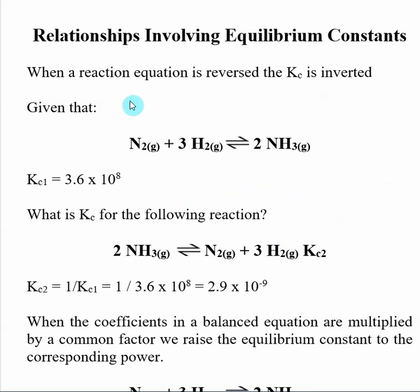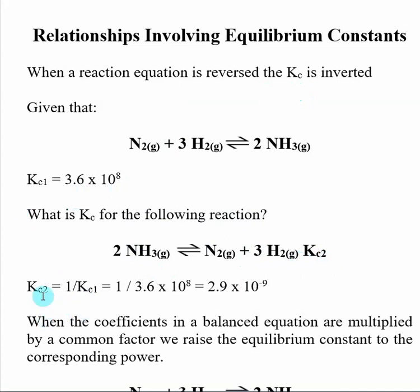The first rule is that if I reverse a reaction equation, the K for the new reaction is going to be the inverse of the first K value. So if I give you this reaction and tell you the K value is 3.6 times 10 to the 8th, then I reverse the reaction so the products are now reactants and reactants are now products, the new KC2 for this second reaction is 1 divided by KC1, in this case 2.9 times 10 to the minus 9th.